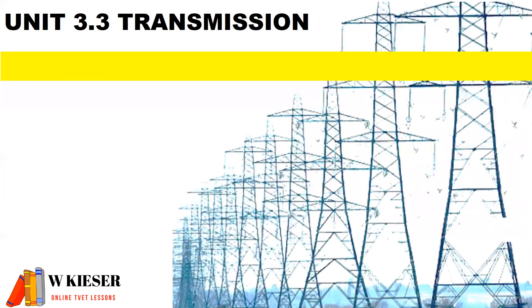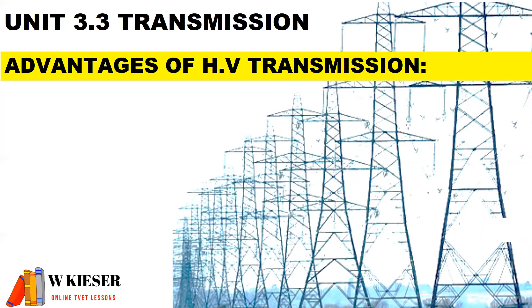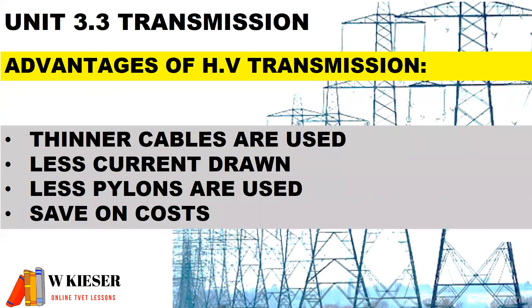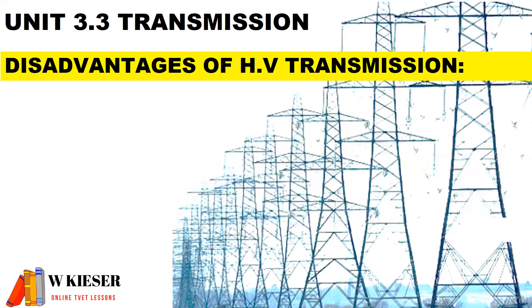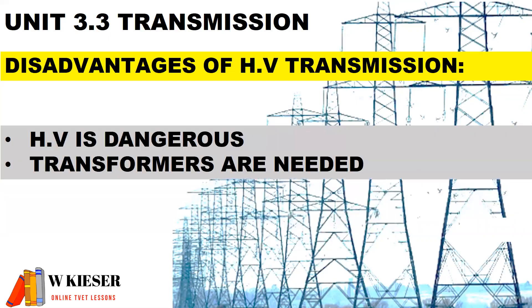In terms of transmission, the advantages of high voltage transmission are that thinner cables are used, less current is drawn, fewer pylons are used, and we save on costs with less material. The disadvantages are that high voltage is dangerous and we need additional transformers.